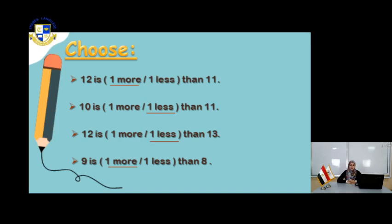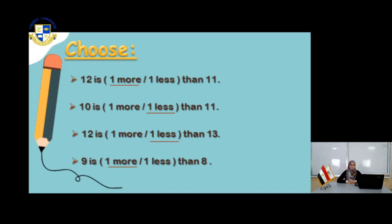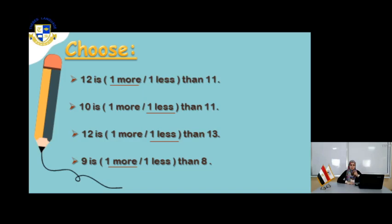For the third one: 12 is one more or one less than 13. 12 is one less than 13. For the last one: 9 is one more or one less than 8. Count: 1, 2, 3, 4, 5, 6, 7, 8, 9. So 9 is one more than 8. That's right, one more than 8.